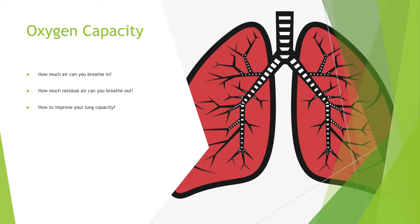Oxygen capacity is how much air you can breathe in. Can you breathe in to the very end? Can you sip just a little bit more air? How much residual air can you breathe out? And then, how quickly can you bring that air back in? How do you improve your lung capacity? Oxygen capacity comes down to what is your lung capacity — how much air can you physically hold in your lungs that can be transferred from the lungs into the circulatory system. This is number one.